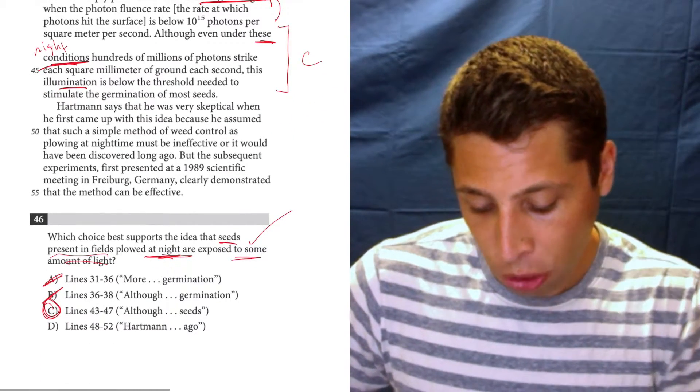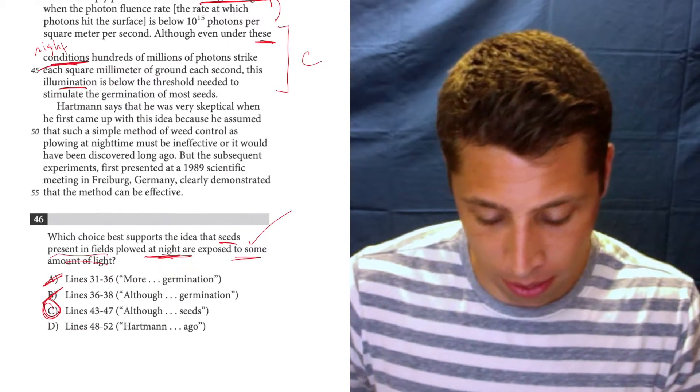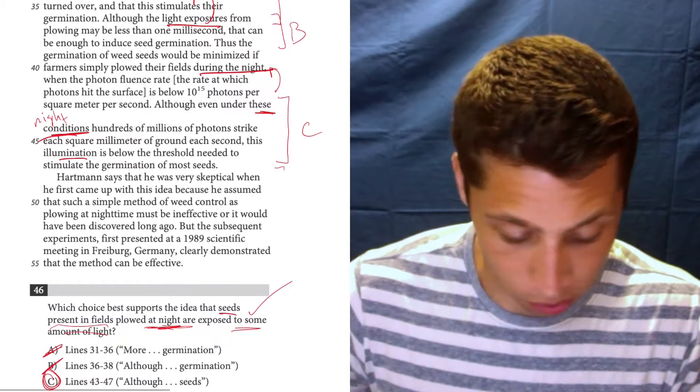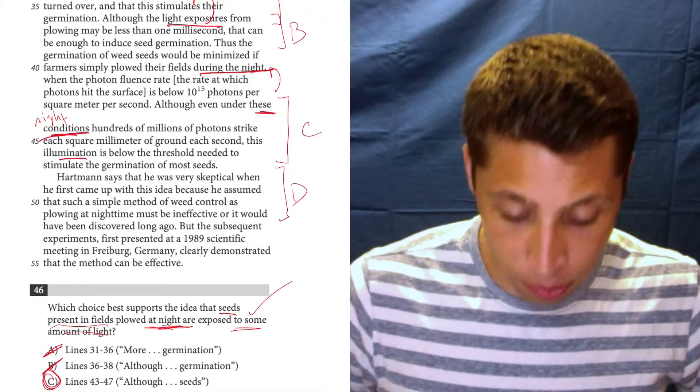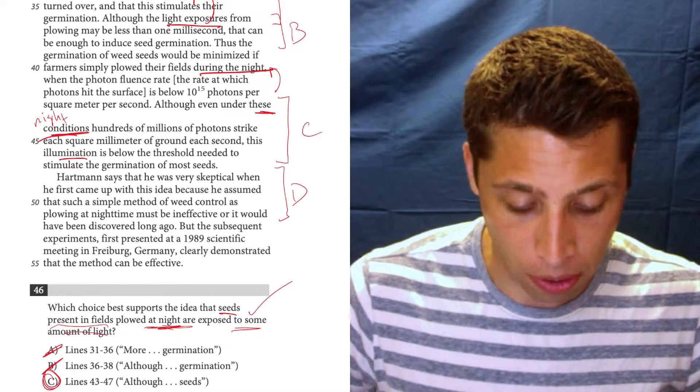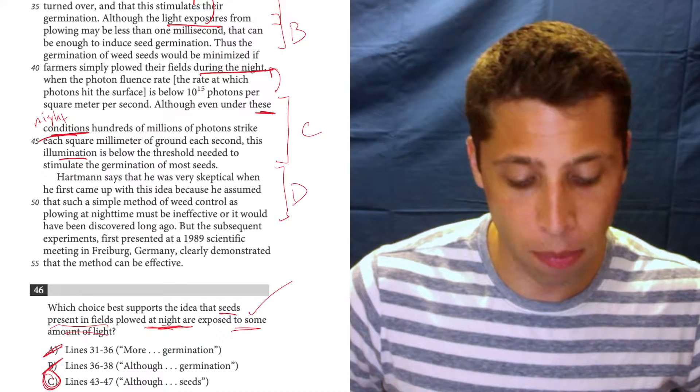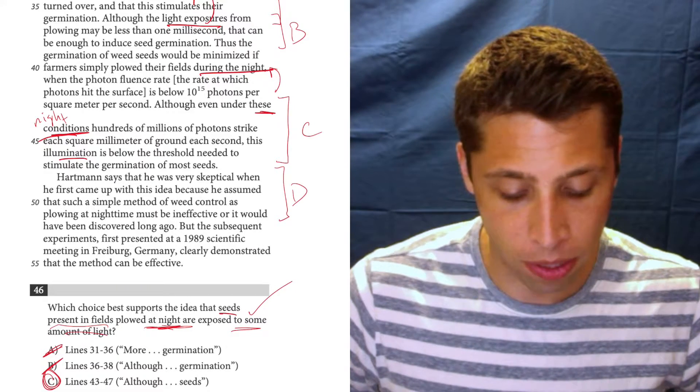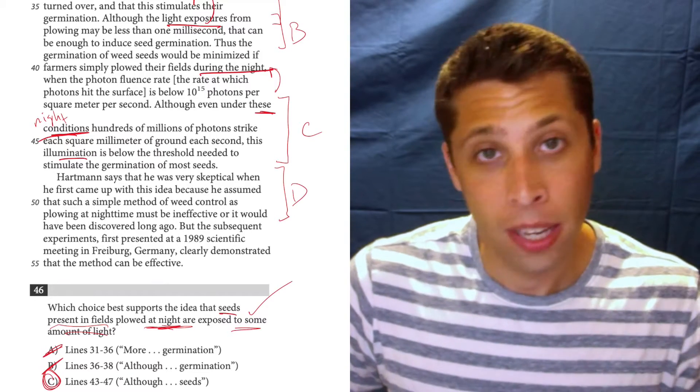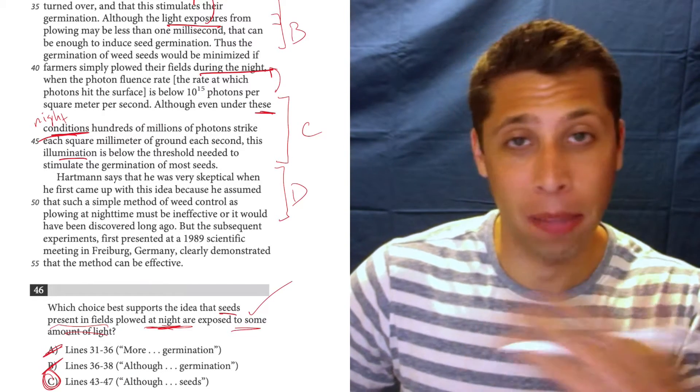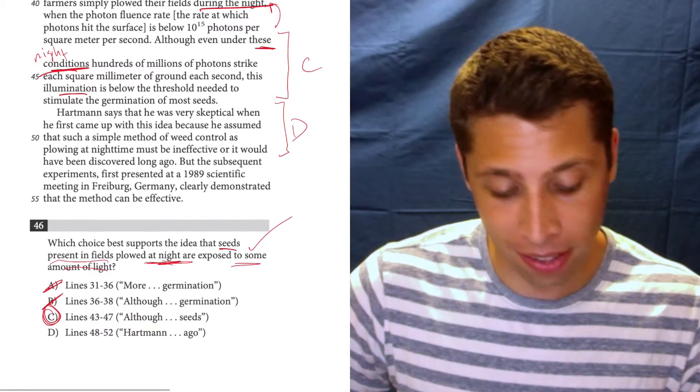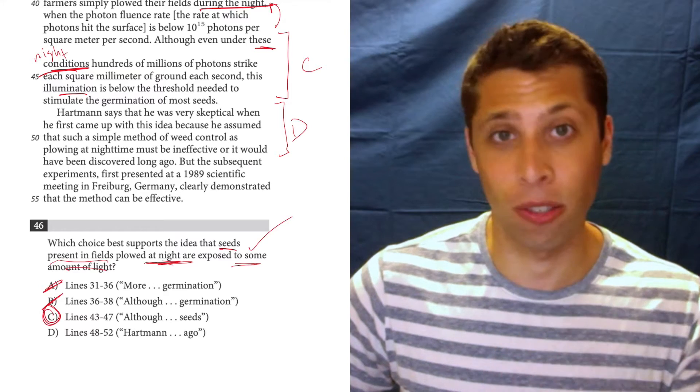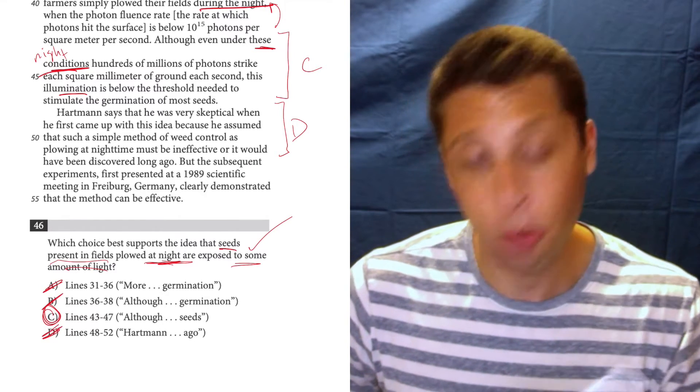So let's read D just to be sure, but I'm pretty confident that C is the answer. D 48 to 52 is right here. Hartman says that he was very skeptical when he first came up with this idea because he assumed that such a simple method of weed control as plowing at nighttime must be ineffective or it would have been discovered long ago. Well, it's not saying that light hits it. It's just saying that plowing the fields at nights would be good. That's not the same as C, where it's very clearly saying that light is hitting that soil and hitting those seeds, so it's a much better match.